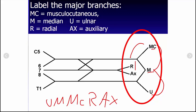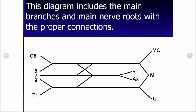Ulnar, median, musculocutaneous, radial, and axillary nerves. So this diagram will include the main branches of your brachial plexus and the proper connections. But let's make this a little bit more detailed.